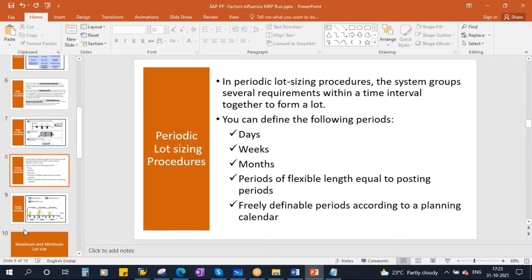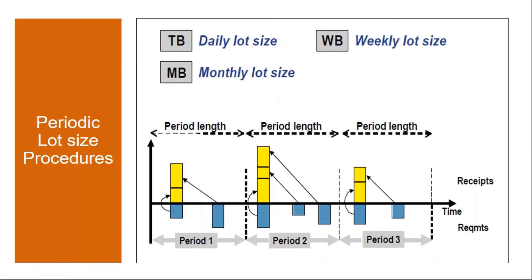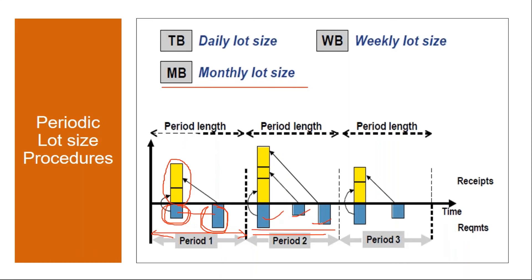Let me explain how the periodic lot sizing procedure works. You define a period — let's say monthly lot size. The system will take all the requirements of that month and club them together, and for that entire month it will create only a single planned order. If within a period you have three requirements, it clubs them and creates a single planned order.